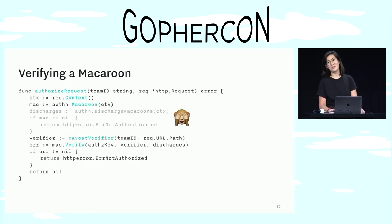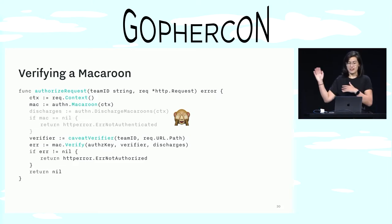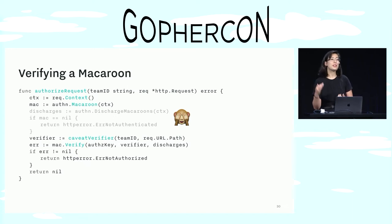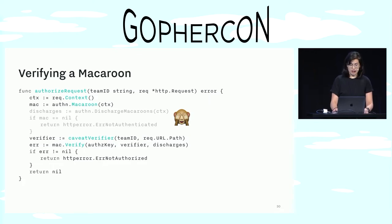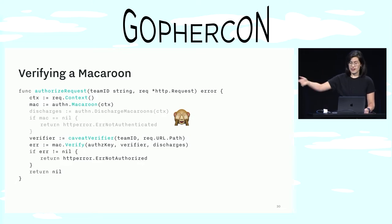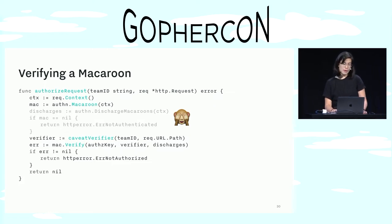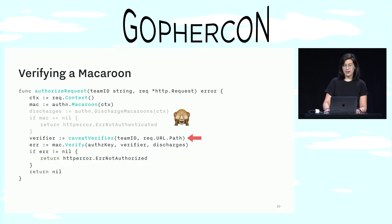So how is a macaroon used in a request? Well, the entity making the request can pass this whole thing along, and the server can prove that the macaroon is valid by recalculating all of the intermediary hashes starting with its own secret key. There's a bunch of things going on in this snippet from the Chain code base. You should ignore the grayed-out section for now — I'll get into what that's doing in a minute. You can see here that we're just getting the macaroon out of the request context, setting up a caveat verifier, and then calling verify on the macaroon with the verifier and the secret key.